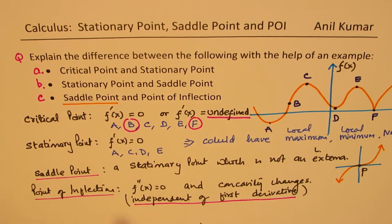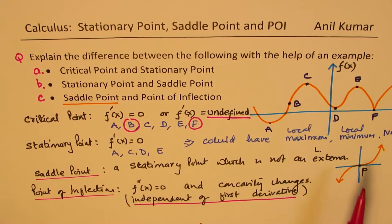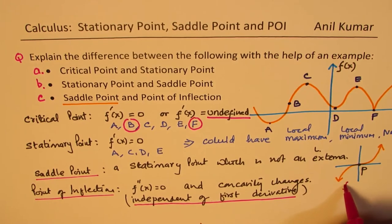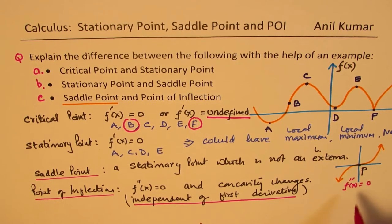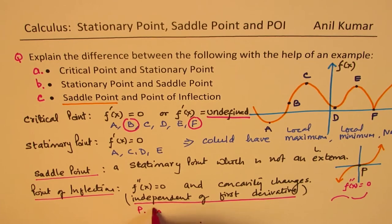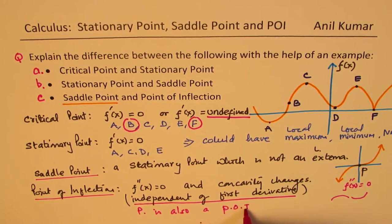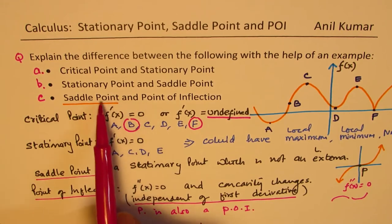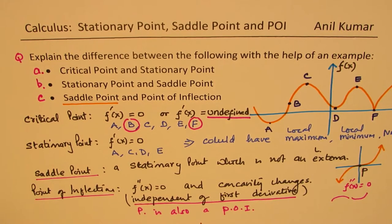This is very important to understand — that is where the difference between the saddle point and the point of inflection comes. They are very different, though you could sometimes have both at the same point. In this case, P is the one where the second derivative is also zero and the concavity is changing, so P is also a point of inflection. But it is not always true, and that's why they are different.